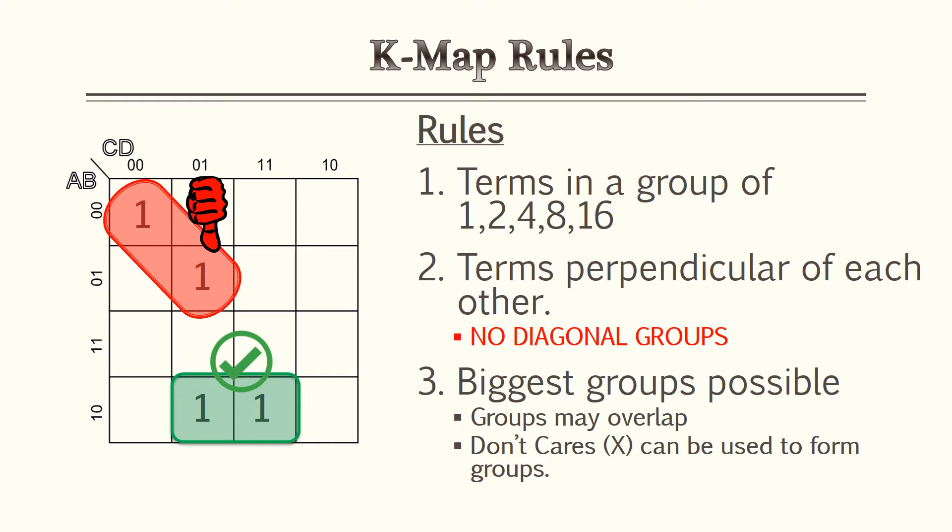When utilizing K-maps there are rules to abide by. It must be in terms of 1, 2, 4, 8, and 16. The terms must be perpendicular — you can't have ones or zeros diagonal to each other in a group. Last but not least, and this is the most important: the biggest groups possible in the least amount of groups. Your whole goal is to have all your ones or zeros in the same group. Groups may overlap, and don't cares, known as X's, can be used in any way.